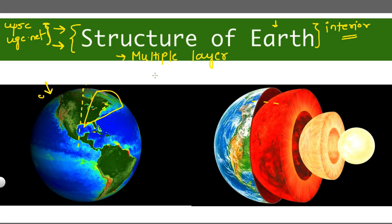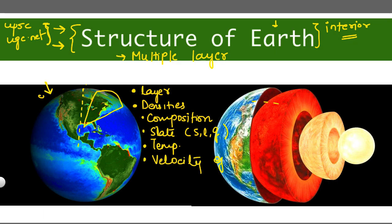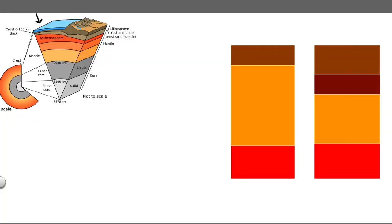We are going to discuss these layers depending on a few points. First, we will see what the layers are and on what basis they have been classified. Then we will discuss densities, compositions — meaning what type of rocks make up the layers — and the state of these rocks, whether the matter exists in liquid, solid, or gaseous form. We will also discuss the temperature profile of each layer, velocity of seismic waves, and the discontinuities — what exactly they are and the different types existing at the different layers.